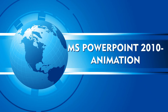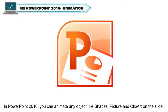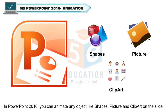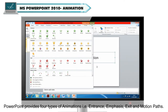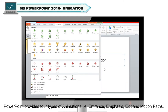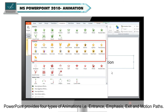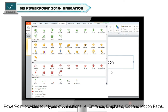MS PowerPoint 2010 Animation. In PowerPoint 2010, you can animate any object like shapes, pictures, and clipart on the slide. PowerPoint provides four types of animations: entrance, emphasis, exit, and motion paths.